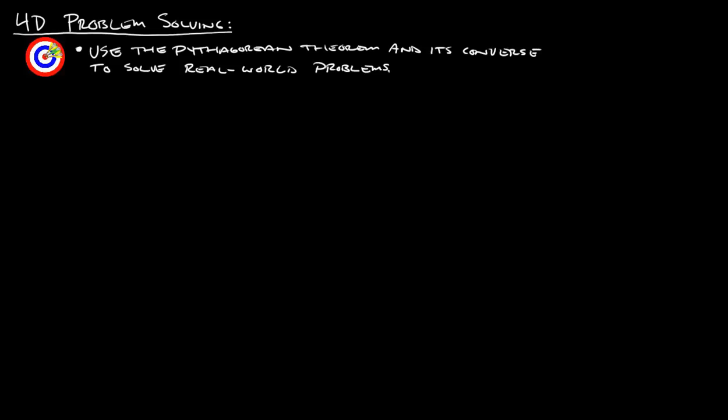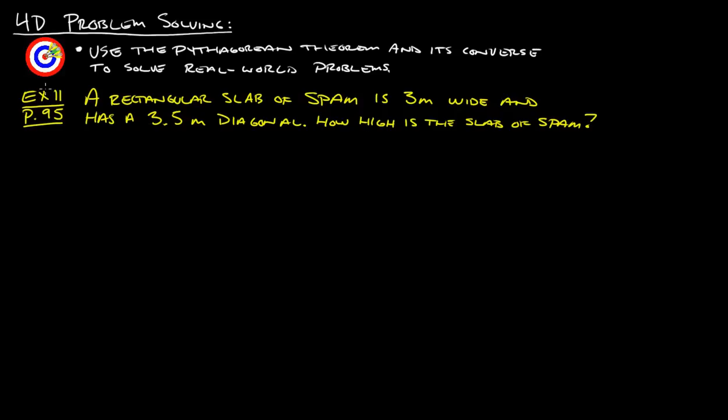So let's jump straight into an example. That will be example 11 from page 95. It says a rectangular slab of Spam is 3 meters wide and has a 3.5 meter diagonal. How high is the slab of Spam? If you don't know what Spam is, you need to ask your parents. They will probably know.